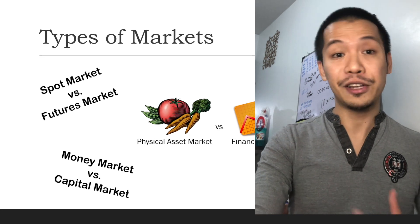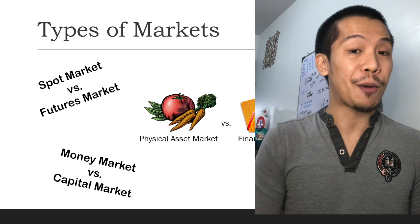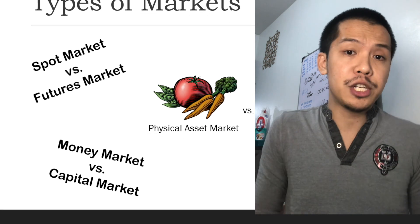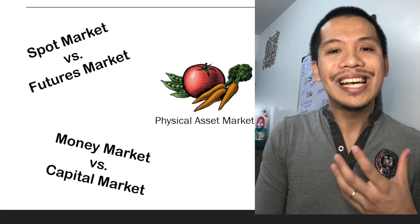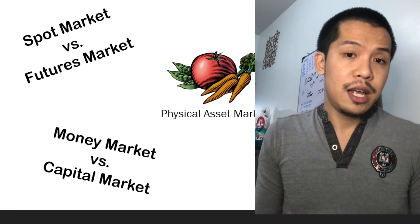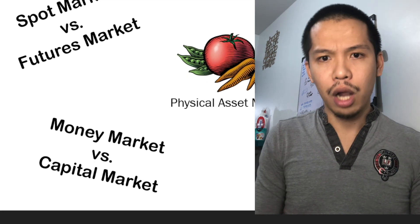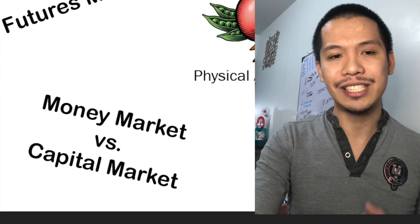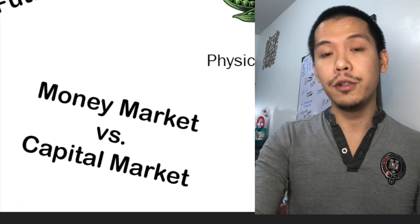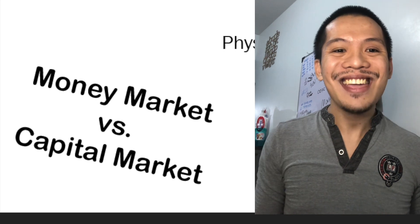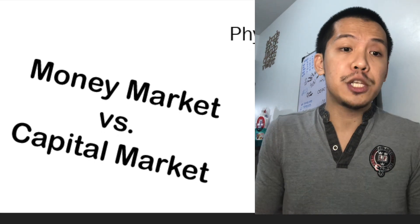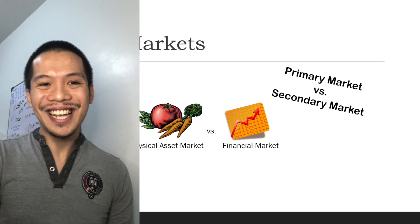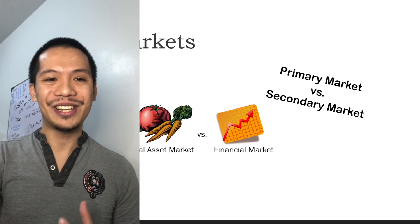Money markets are where short-term investments are bought and sold. Examples would be treasury bills and commercial papers. Treasury bills are short-term instruments issued by the government. Commercial papers are short-term debt instruments issued by stable large companies. Both mature in less than a year, hence they are almost equivalent to cash — thus the term 'money market.' Capital markets are where long-term investments are bought and sold, including the bond market and the stock market, as they have a maturity greater than a year or no maturity at all, in the case of stocks.